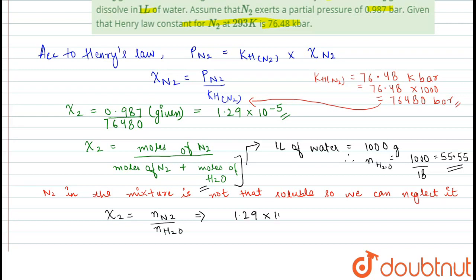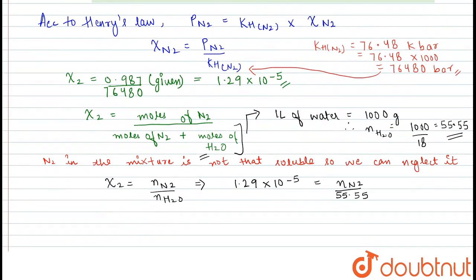We can simply write down mole fraction of N2 as N of N2 divided by N of H2O. So, 1.29 into 10 raised to the power minus 5 equals N of N2 divided by 55.55 moles of H2O.